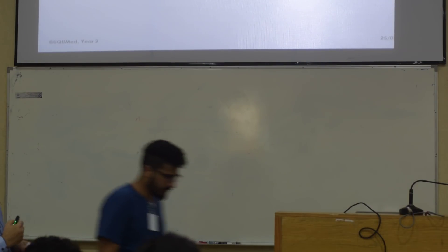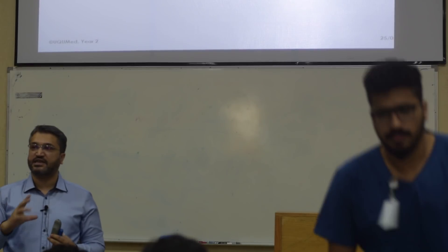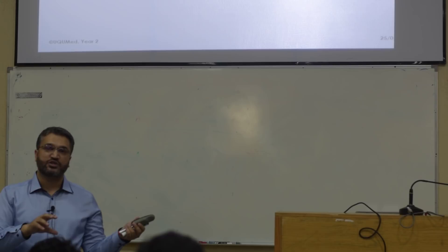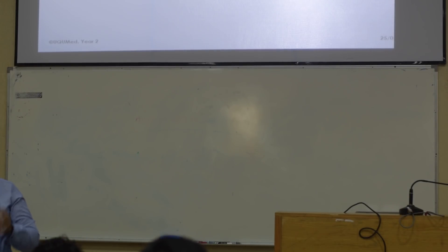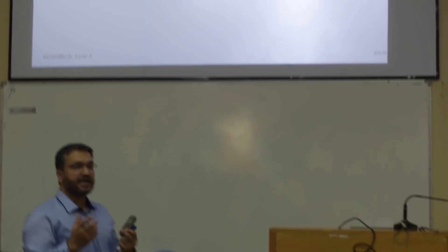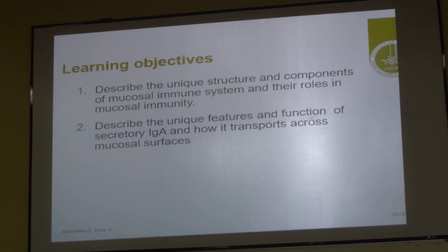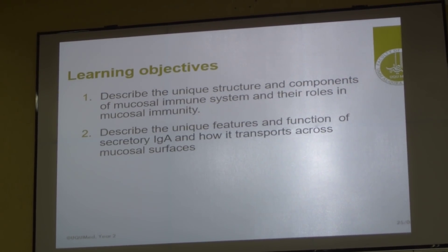Going through the learning objectives — what are the different things I will be focusing on? First, the specialized components of mucosal immunity. Then in the Infectional Defense module we learned about different antibodies like IgG, IgA, IgM, IgD and IgE. The functions of IgE were discussed in more detail with respect to immediate hypersensitivity and IgG antibacterial functions, but IgA — all we told you was that it has antiviral effects, but not more than that.